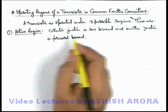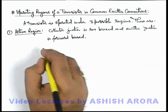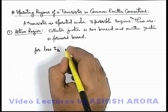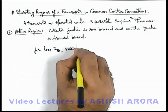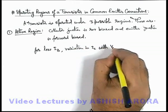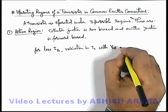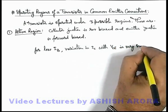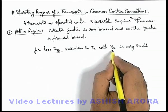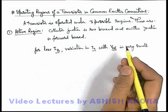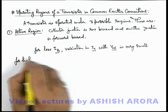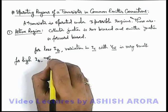When we talk about the active region, for low values of base current, the variation in collector current with VCE, that is the collector-emitter voltage, is very small or negligible. When base current is small, variation in collector-emitter voltage does not much affect the collector current. For high values of IB, this variation is large.